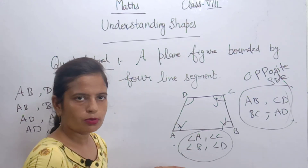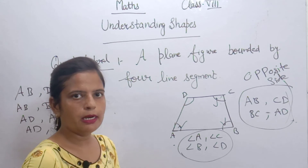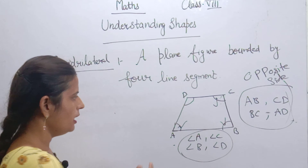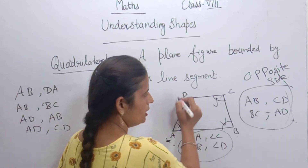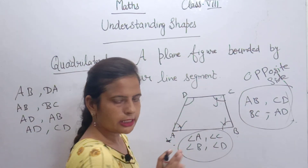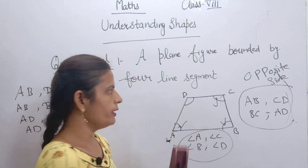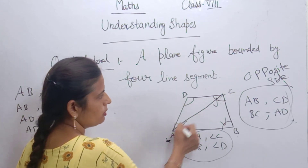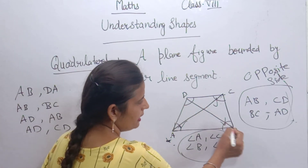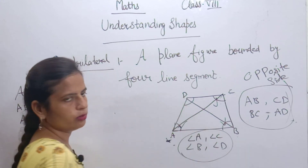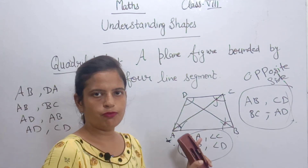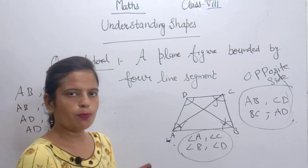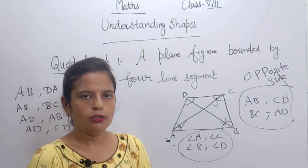So now you have read all the properties of a Quadrilateral. What have you read? You have the definition, and then the parts: 4 vertices — A, B, C and D; 4 sides; 2 diagonals; 4 angles; adjacent sides; adjacent angles; opposite sides; and opposite angles. So these are 8 things in total.